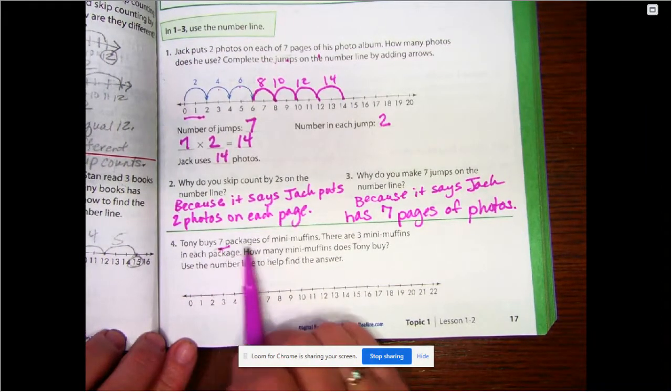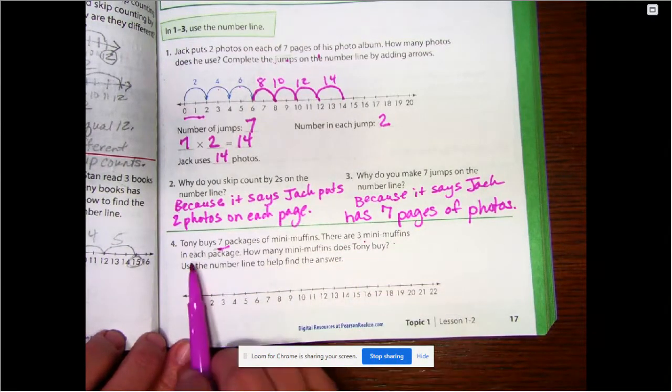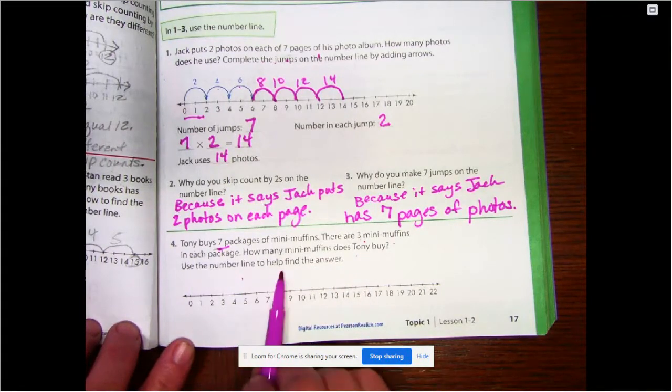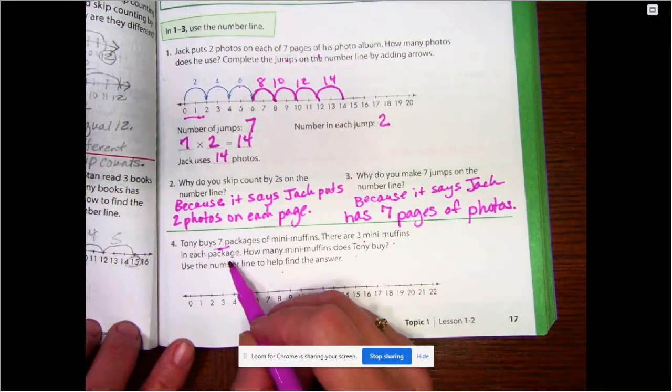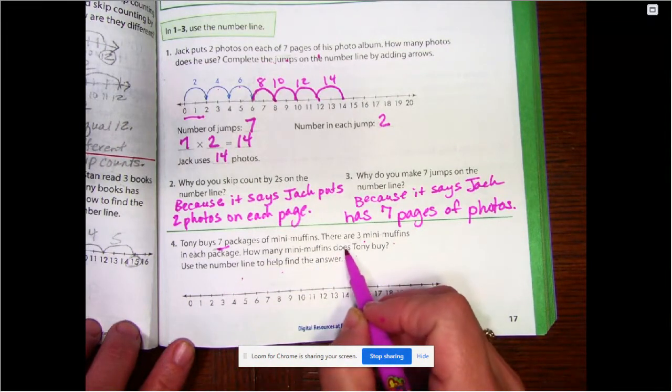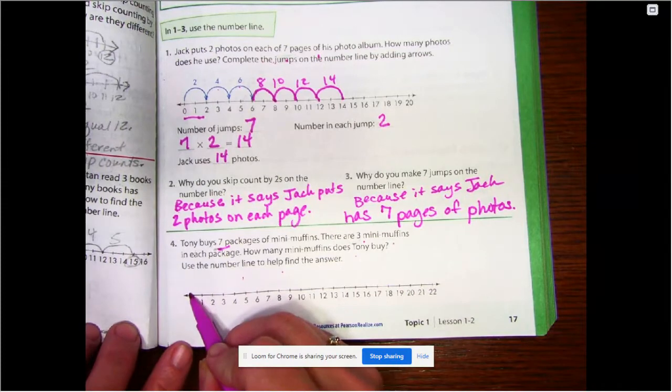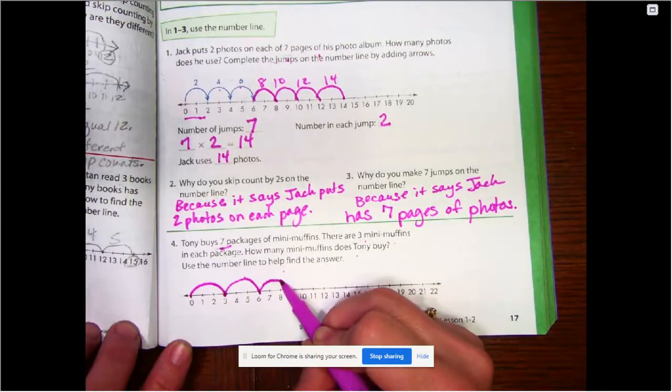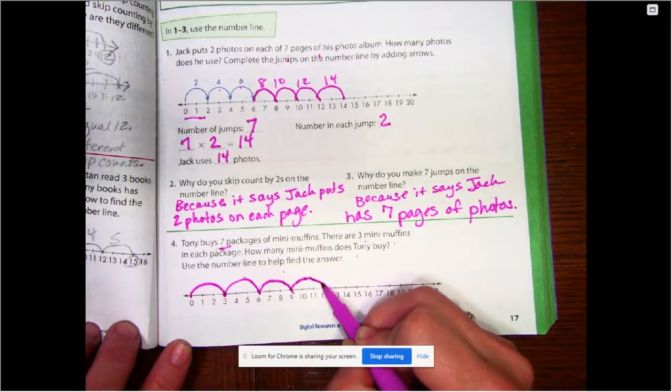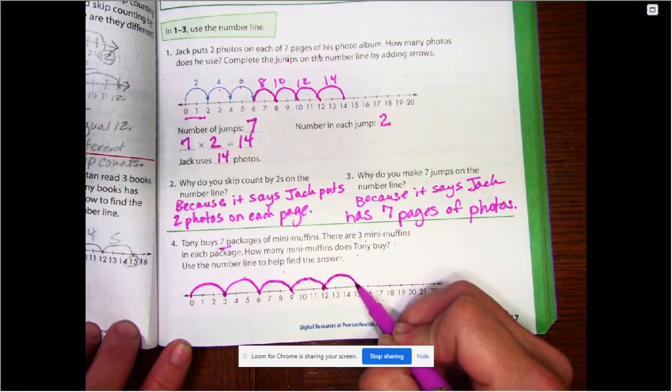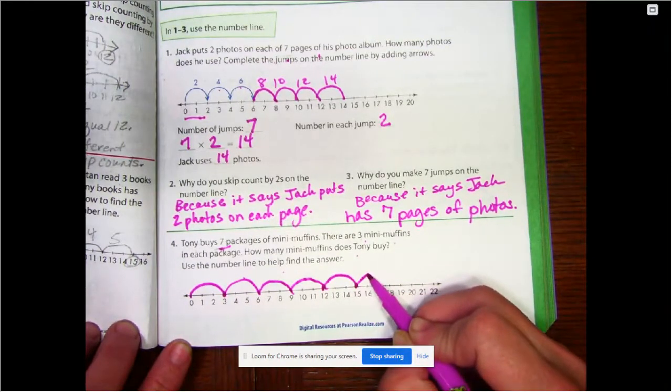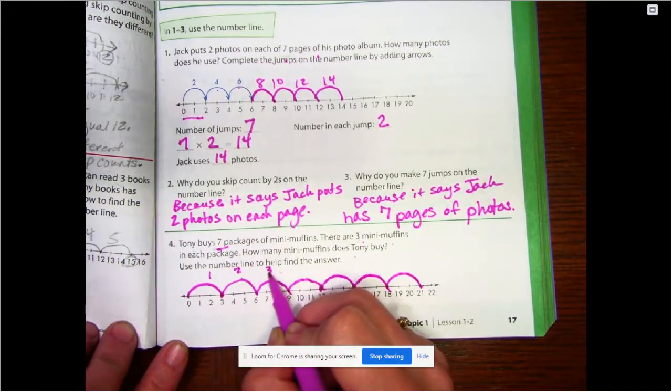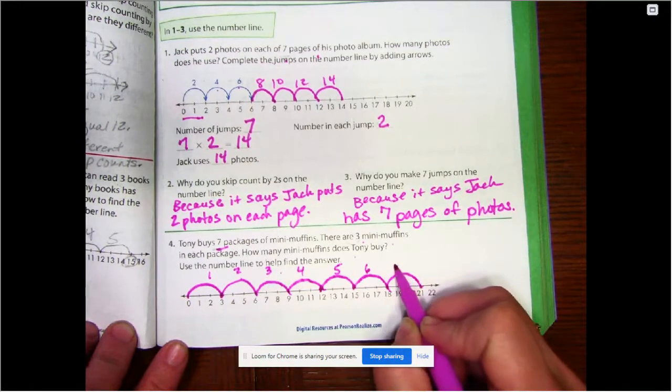Tony buys seven packages of mini muffins. There are three mini muffins in each package. How many mini muffins does Tony buy? Use the number line to help find the answer. So there are seven packages. That means I'm going to be doing seven hops. And the hops are going to be three at a time. So one, two, three, four, five, six, seven.